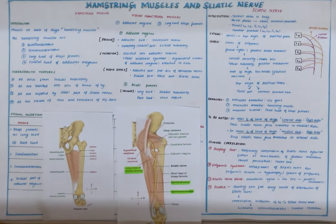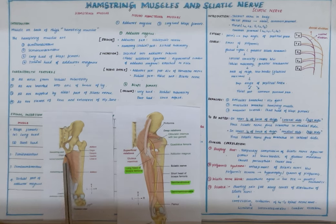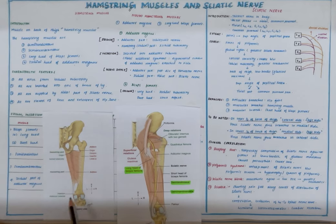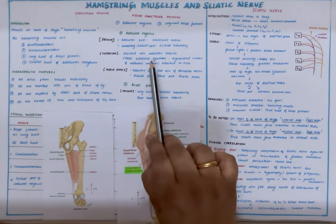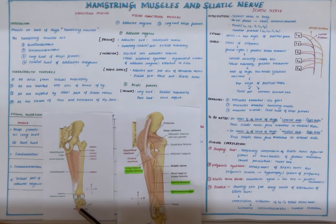Then we have the adductor magnus muscle, which has two parts: the hamstring part and the adductor part. The hamstring part arises from the ischial tuberosity and, as it comes down, gets inserted into the adductor tubercle of the femur. Adductor magnus is called the modified hamstring, because as you can see it gets inserted into the femur. However, there is a ligament called the tibial collateral ligament of the knee joint, which is a degenerated tendon of adductor magnus that gets inserted into the tibia — that is why this is considered a modified hamstring muscle.